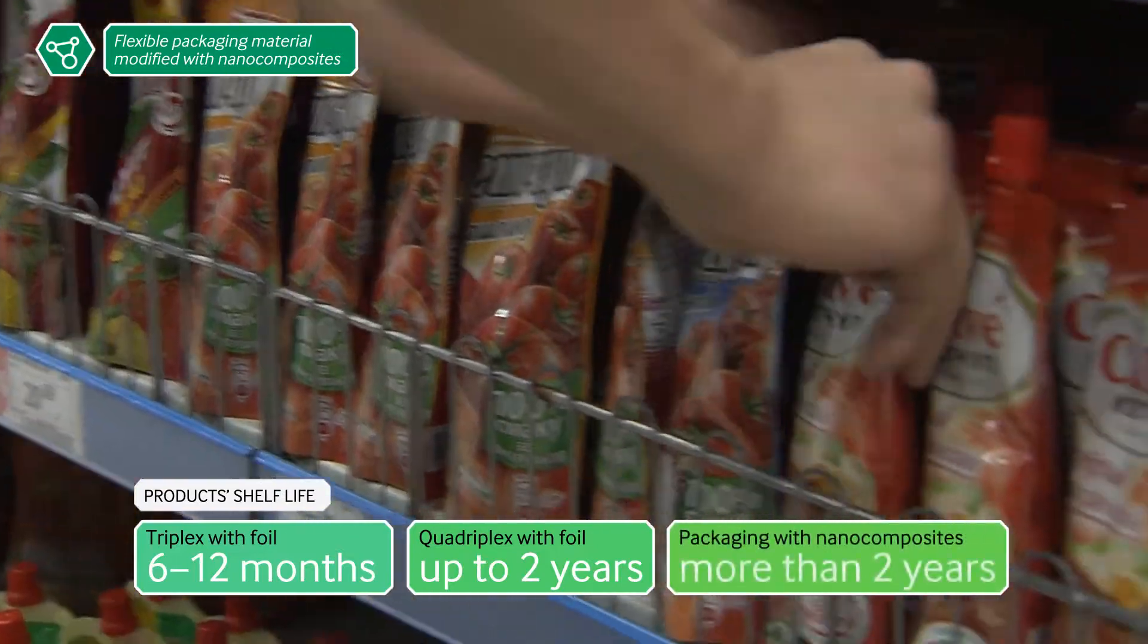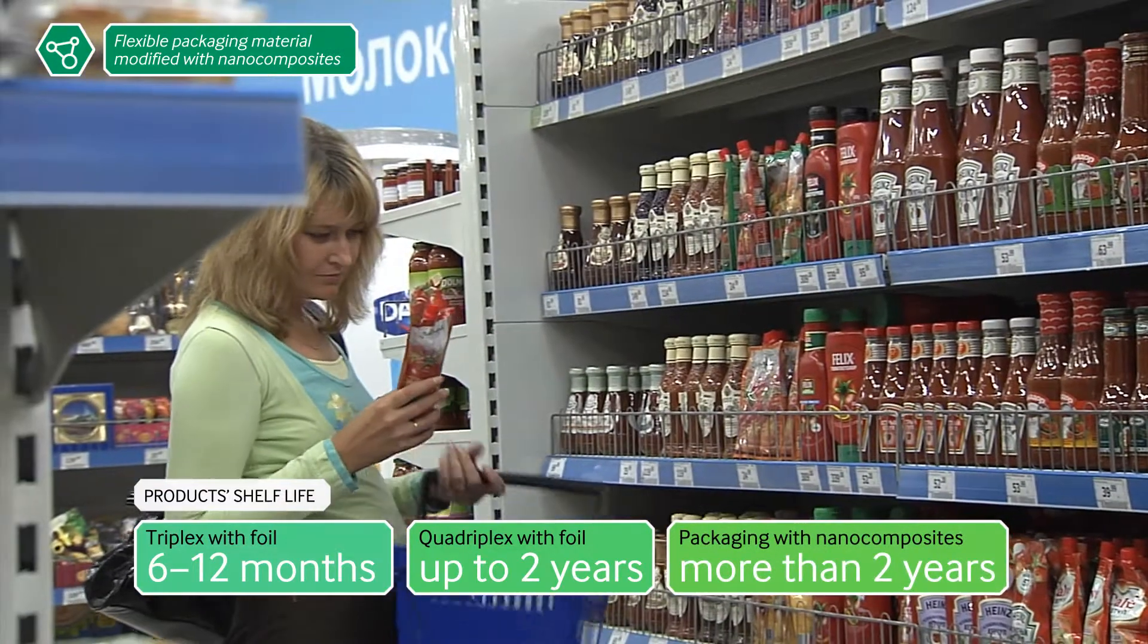Elimination of aluminium foil means that the packaging can be transparent. The consumer sees what he's buying.